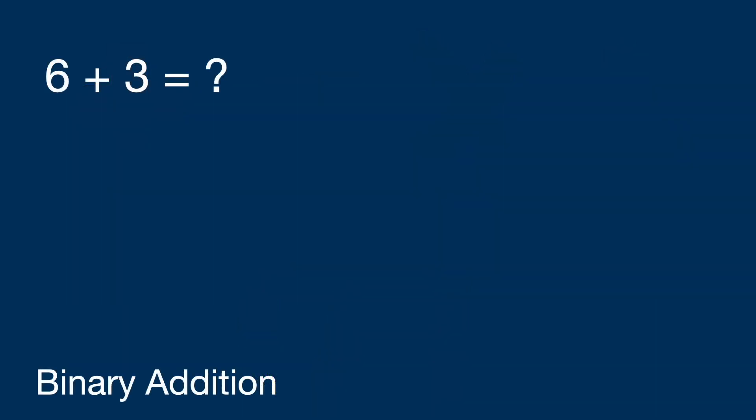Binary addition is the easiest of them all. For example, take six and three in binary—those are one-one-zero and one-one respectively. Zero plus one equals one. We move left: one plus one equals one-zero, so we write down zero and carry one. One plus one plus zero equals one-zero, which we write at the left. The resulting number is one-zero-zero-one, which in decimal is nine, the correct answer.